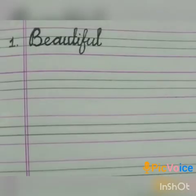First one: Beautiful. Beautiful means 'alagana' — something lovely or pretty. The spelling of beautiful is B-E-A-U-T-I-F-U-L. Beautiful.